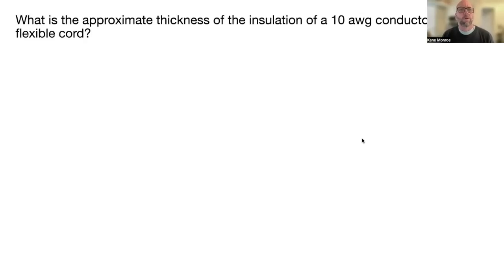What is the approximate thickness of insulation of a 10 AWG conductor in a type SJ flexible cord? 45 mils. Table 400.4.